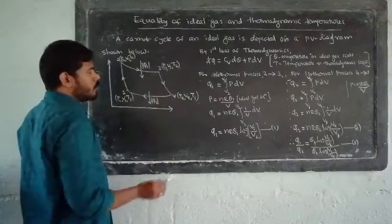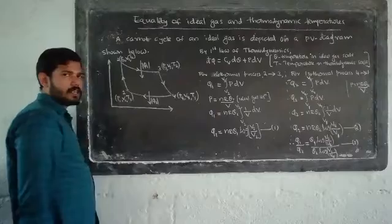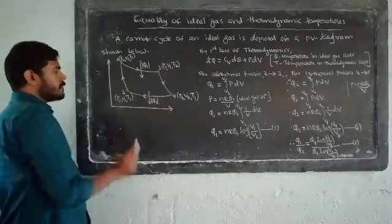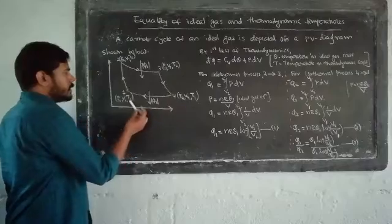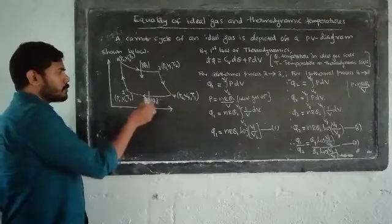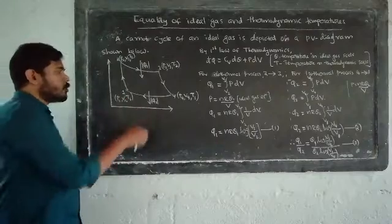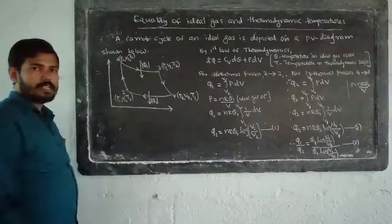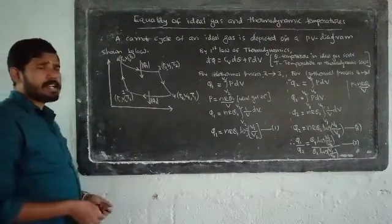States P3, V3, P4, V4 with temperatures T2 and T1. The fourth state back to the initial state is again an isothermal process where the temperature T1 remains constant, with P4, V4 returning to P1, V1, T1. The second stage involves the high temperature reservoir.